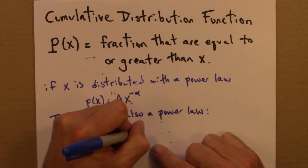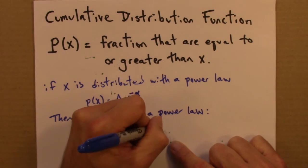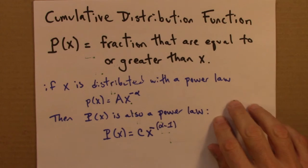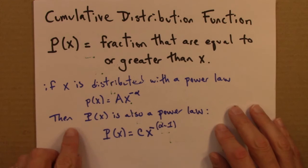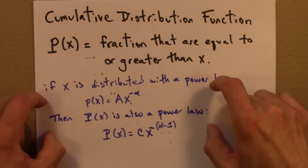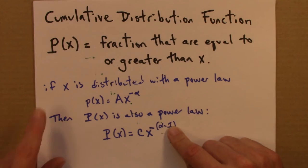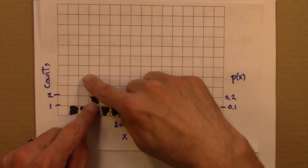So, P of x is going to be something like this, so a different constant here and a different exponent. So, just to reiterate, if x is distributed with a power law, so little p of x, this probability, this histogram-like thing, then capital P, the cumulative distribution function, is also distributed according to a power law. I don't think I can really justify that without calculus. I'll include a short optional video where one can show this using calculus. It just involves an integral.